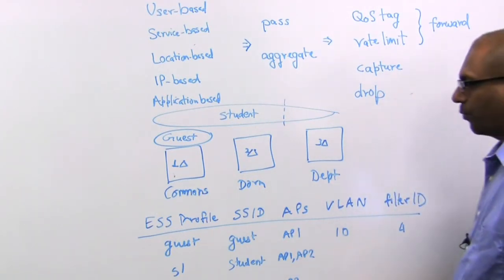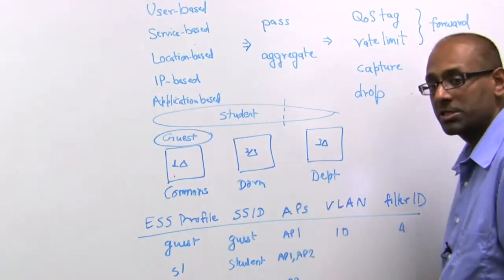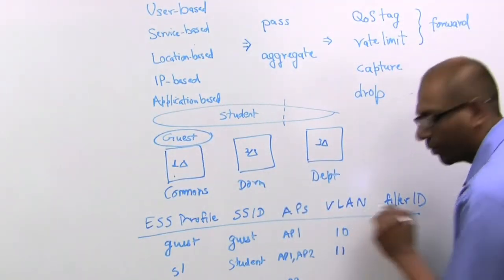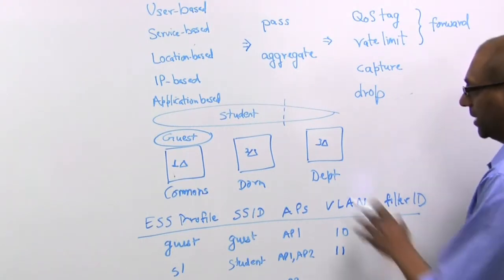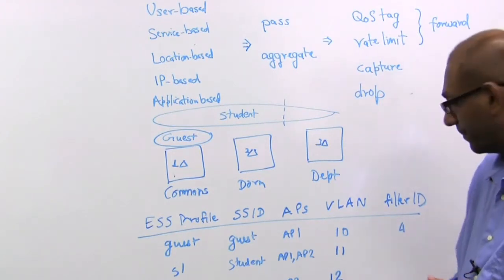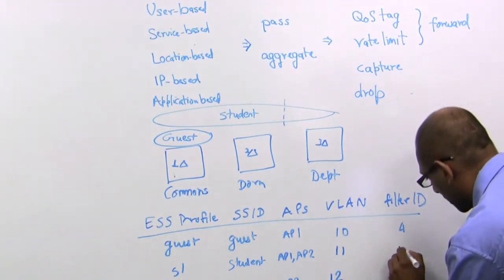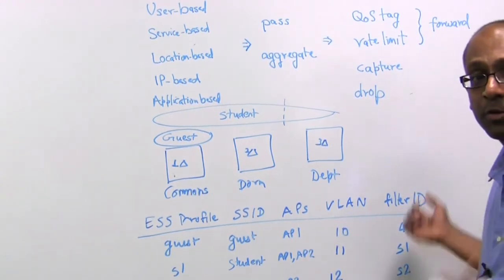Now maybe when the student is in this location, in other words commons and dorm, they get put on VLAN 11, while when the student is in the department, that traffic gets put on VLAN 12. And likewise, let's just call these filter IDs S1 and S2. Notice that these filter IDs are alphanumeric tags.